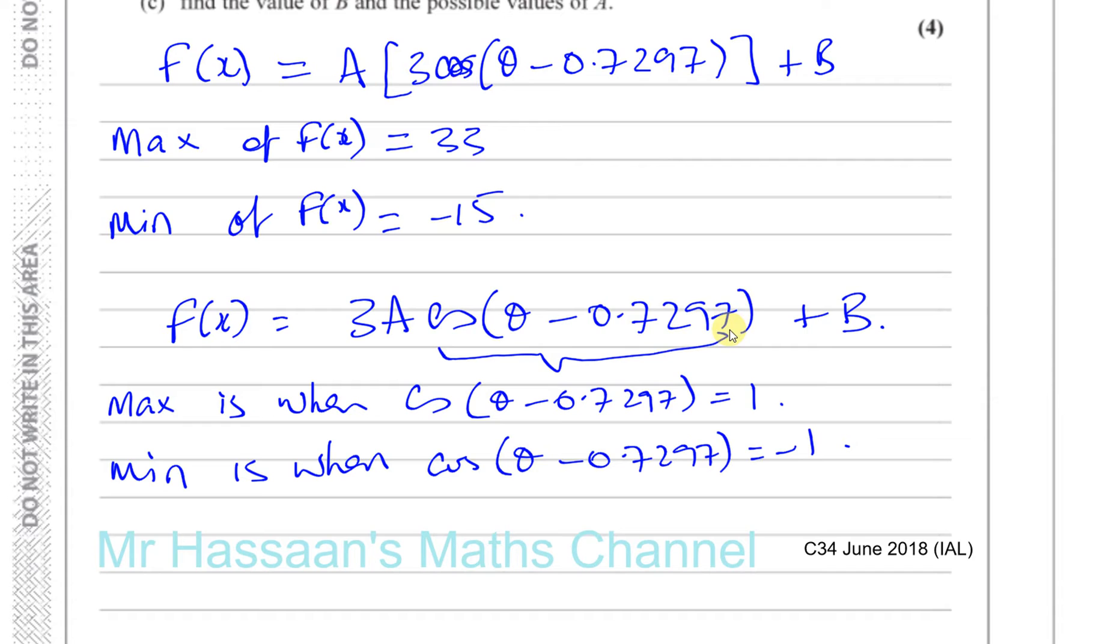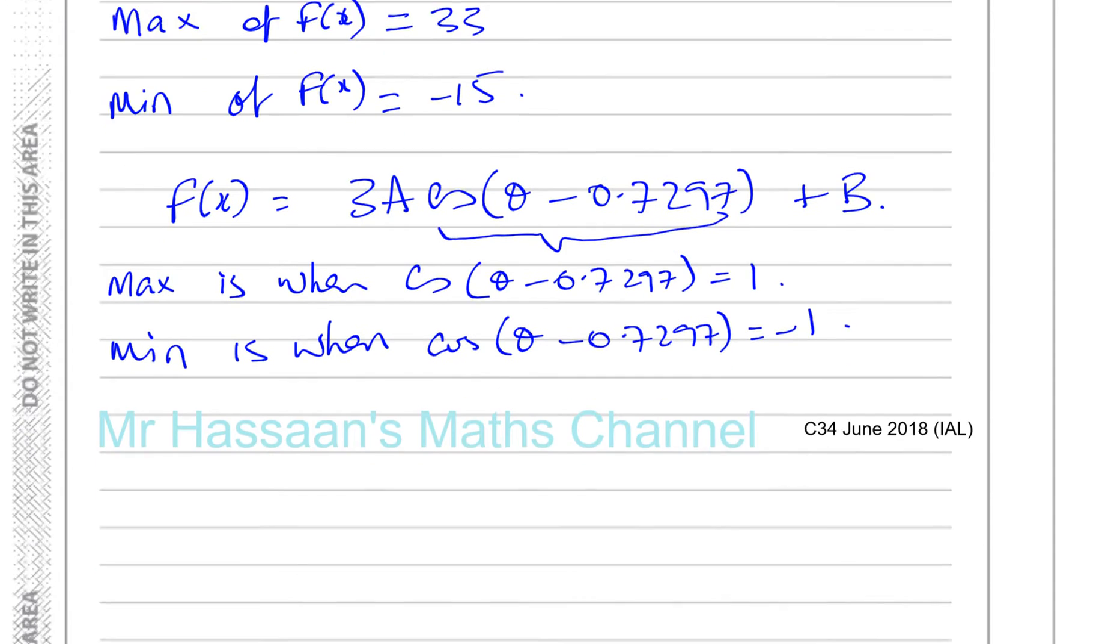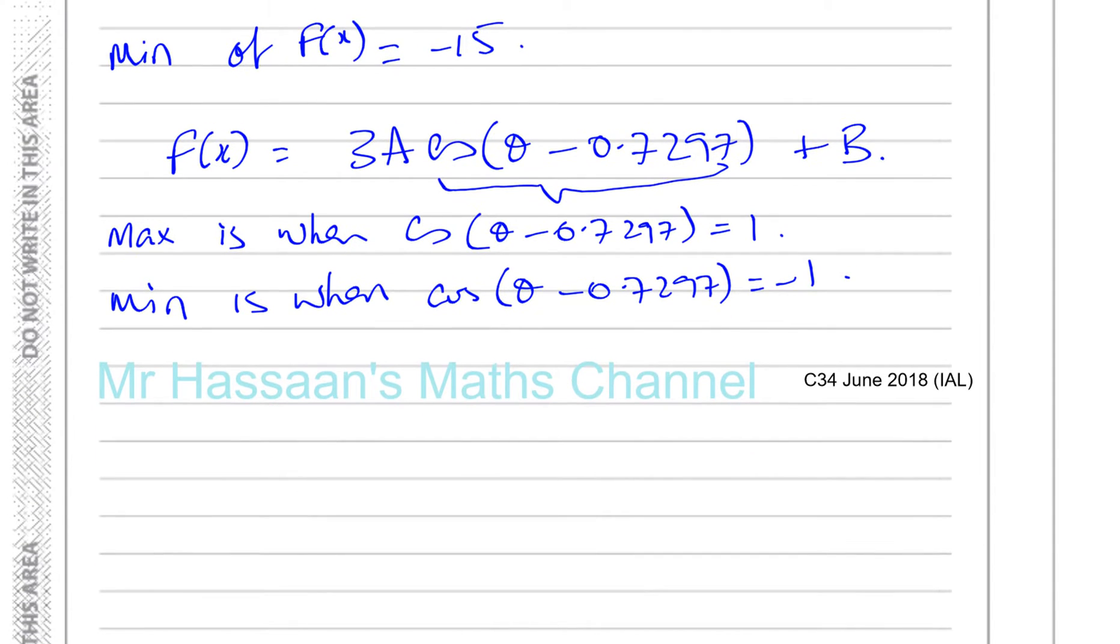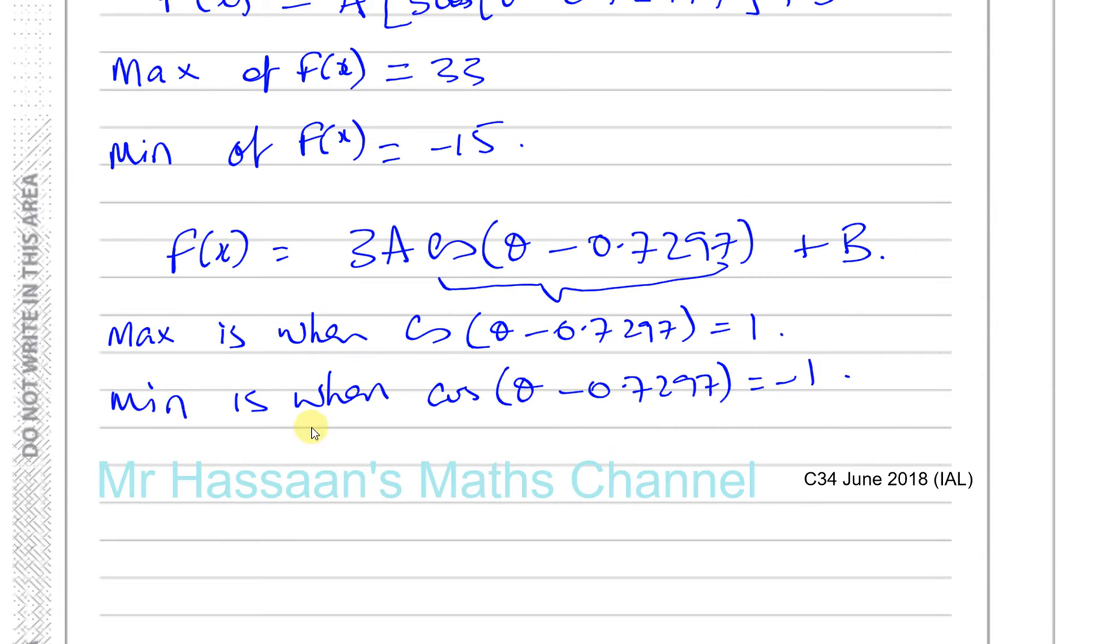This will be the biggest value when this is equal to 1, and the smallest value when this is equal to minus 1. So, what we can do is we can set up two equations. We can say that when this is equal to 1, you're going to have 3A plus B is going to be equal to 33. That's the maximum value. When this is equal to 1, this whole thing becomes 1, so you have 3A times 1 plus B. That's when it's the maximum 33. And we can also say that when this is minus 1, you're going to have minus 3A plus B is going to be, it's the minimum value, which is minus 15.